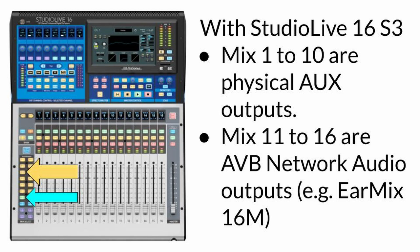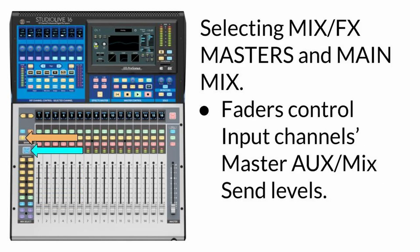One small difference between the StudioLive 16 Series 3 and the StudioLive 24 and 32 is that the StudioLive 16 only has 10 physical auxiliary outputs at the back of the unit. So Mix 1 to Mix 10 are the physical auxiliary outputs, while Mix 11 to 16 are AVB network audio outputs — which can, for example, be connected to an EarMix 16M or any other AVB network audio supported devices. Selecting the mixed FX masters from the bank and the main mix, faders are assigned to the master auxiliary send levels — these are the master levels being sent out to the physical sockets at the back of the unit.